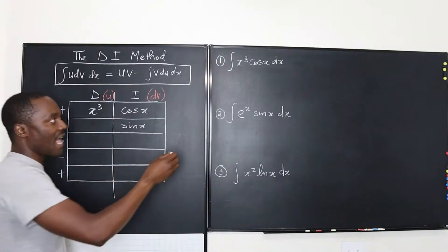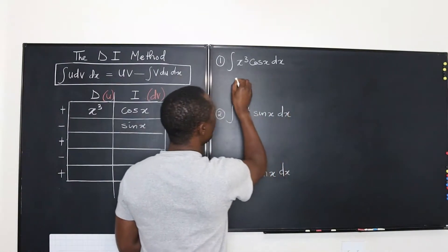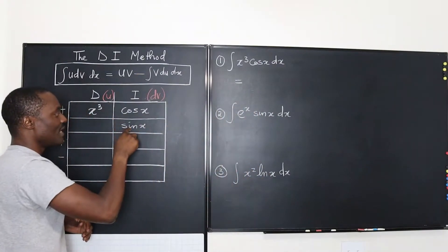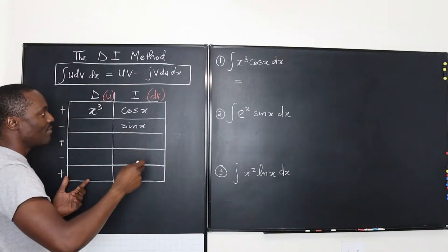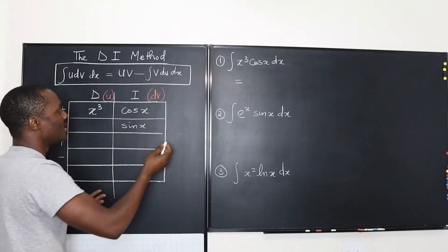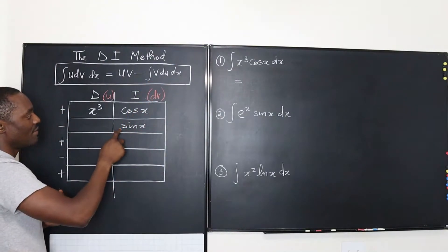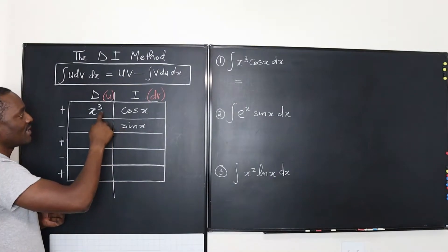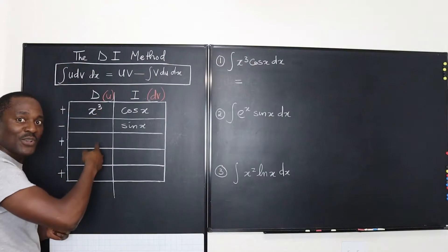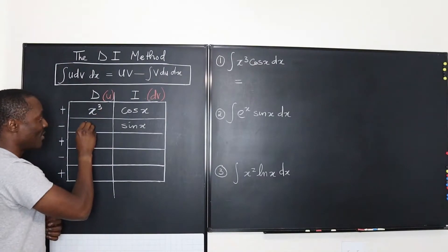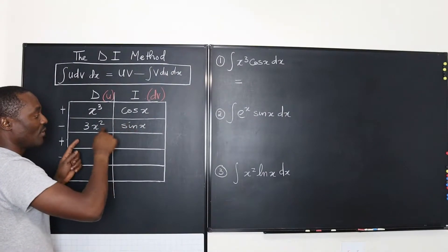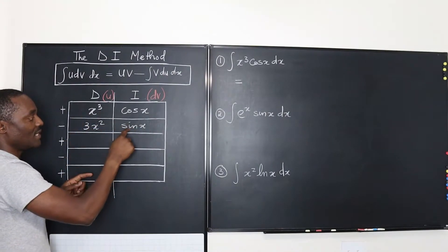The first line of our answer is supposed to be equal to uv. But we're supposed to have the integral of v du. This is our v — but where is du? We don't have du. So let me quickly get du. I'm going to differentiate this side and get 3x squared. So the next line should be uv multiplied by the integral of v du.